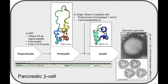First, prohormone convertase 1 and 2 cleave the peptide backbone next to basic amino acids such as arginine and lysine. The C-terminal of the resulting peptide is then polished off by carboxypeptidase E, removing the propeptide, also called the C-peptide, from the middle of the protein.